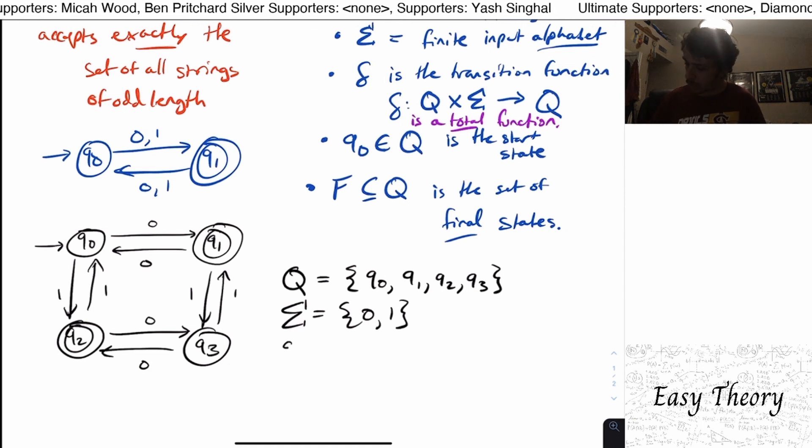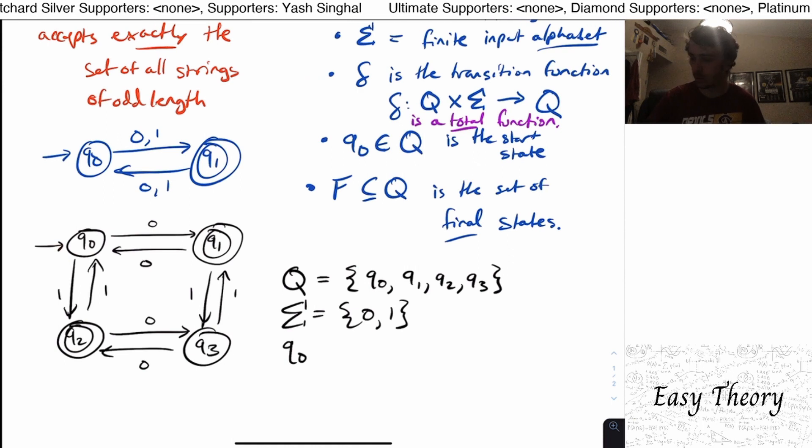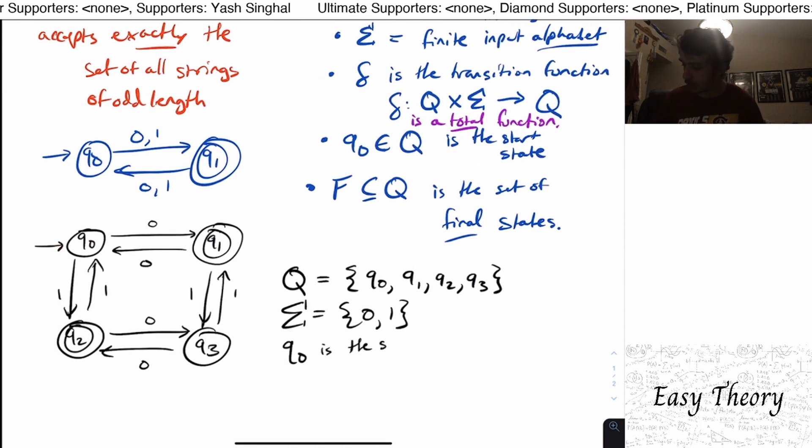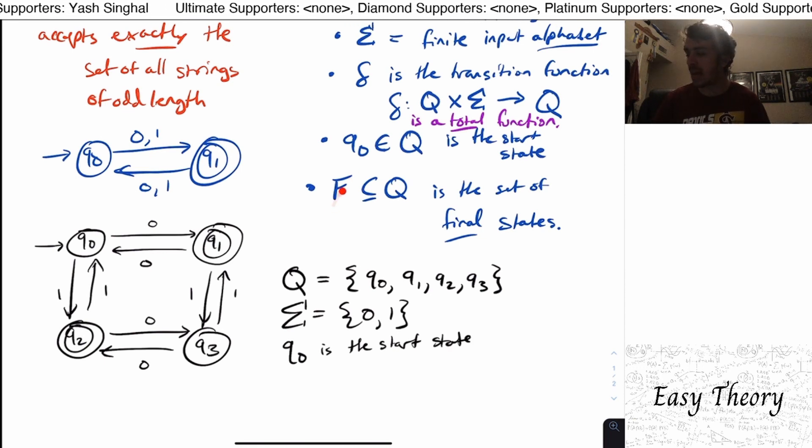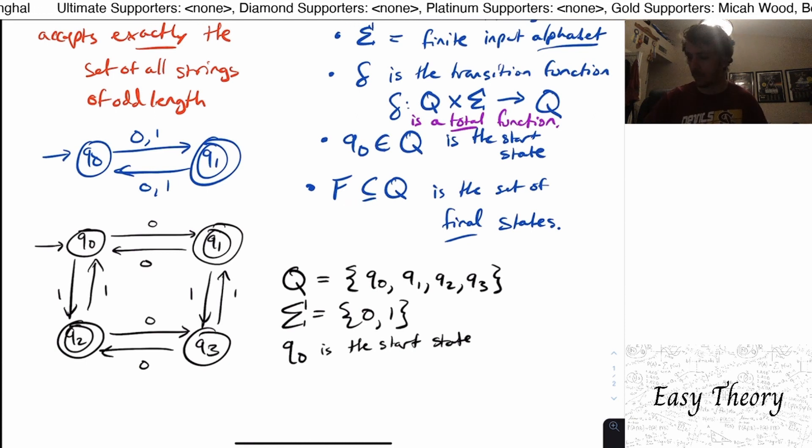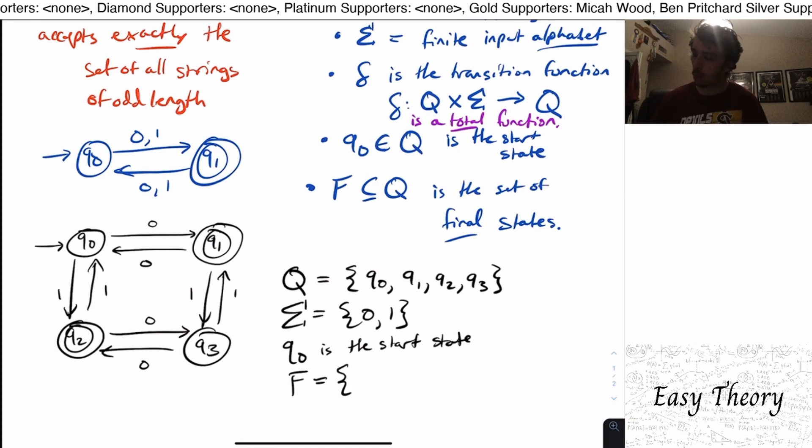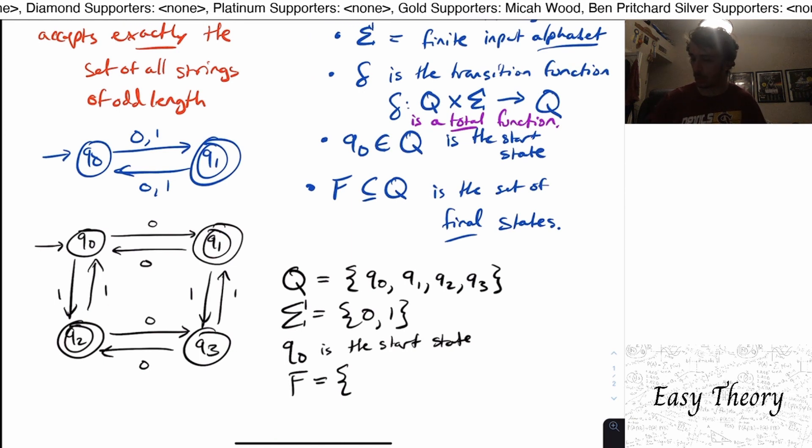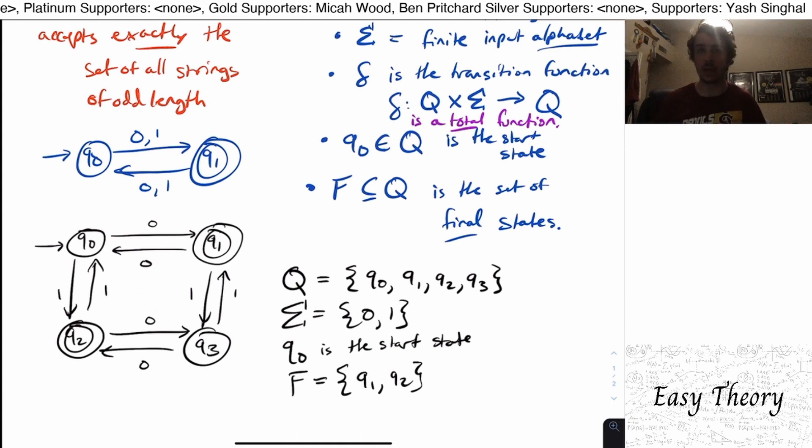I'm going to skip over the transition function for now. I'll come back to it. Well, q, 0 here. Well, what's the start state is the one that has the arrow coming in from nowhere. So q, 0 is the start state. So q, 0 is the start state. What are the final states? Well, remember that f is a subset of q. So therefore, f must be a set right here. So I, again, write it with set notation. Well, what are the things in the set? Well, it's the ones with double circles. So those are q1 and q2. I don't include the other states because they are single circled.